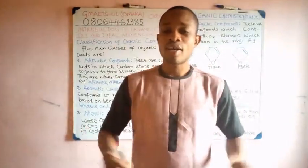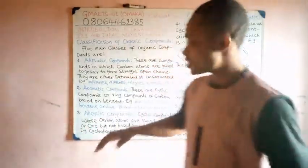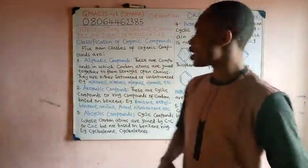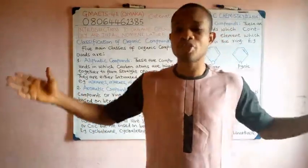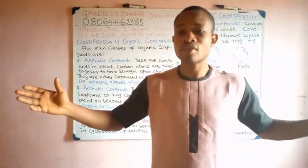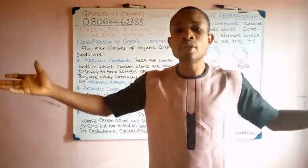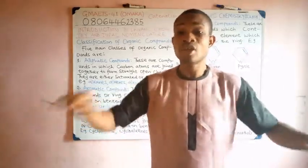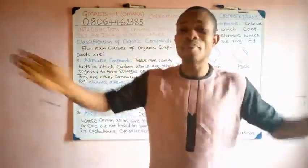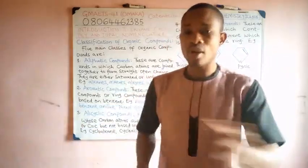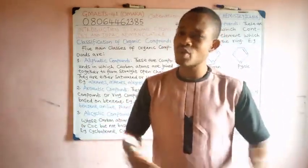What are aliphatic compounds? These are compounds in which carbon atoms are joined together to form straight open chain. Please take note of that statement. To form open chain. Carbon there, they do not form ring. They don't close. They are open.